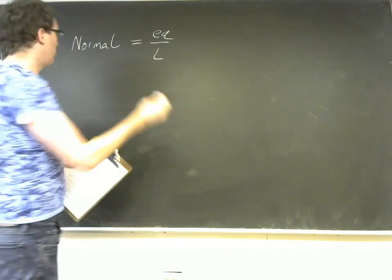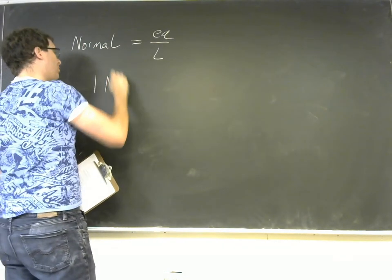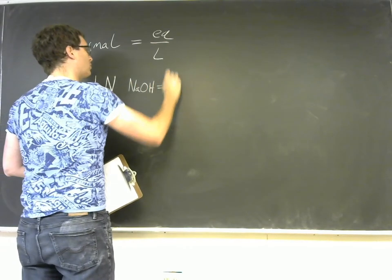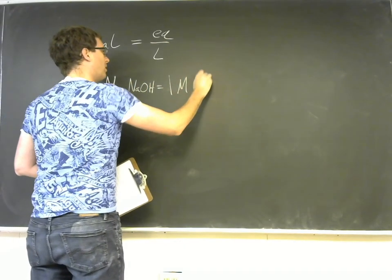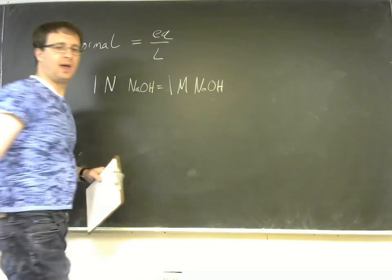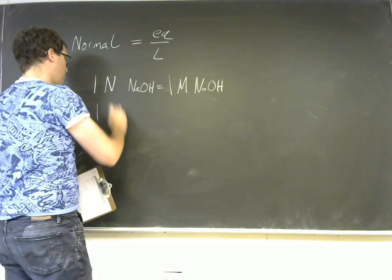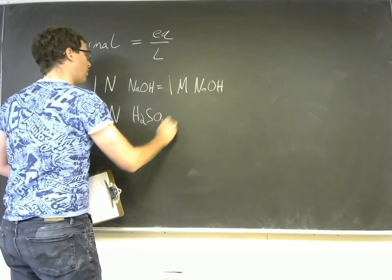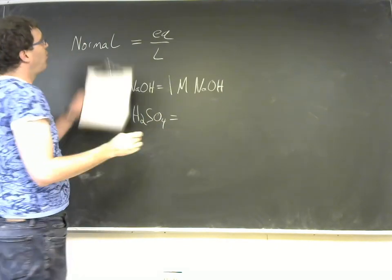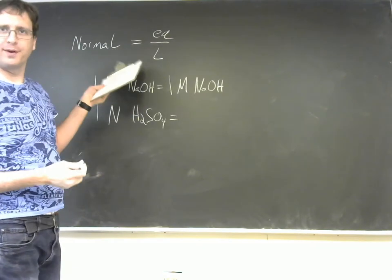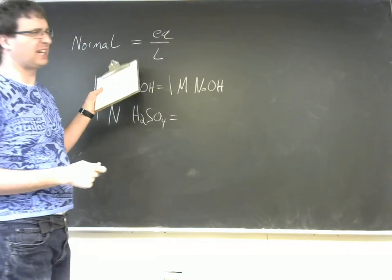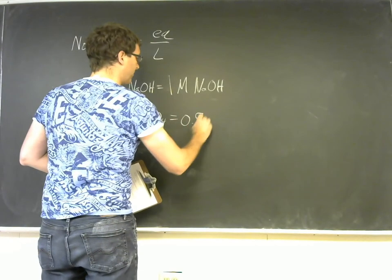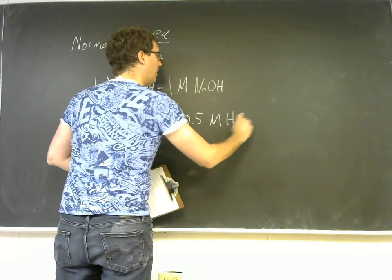So one normal of NaOH is one molar of NaOH. But one normal of H2SO4 was actually just half a mole. So this would be 0.5 molar H2SO4.